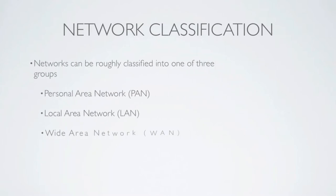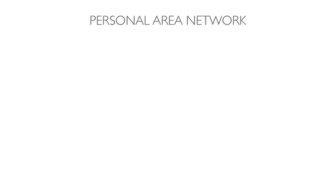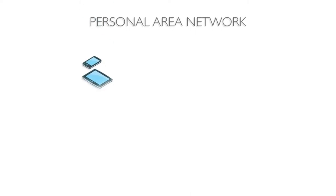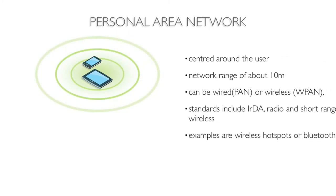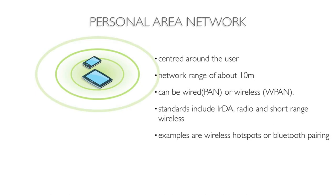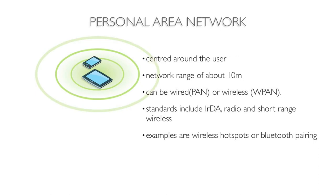Networks can be classified into one of three groups: personal area networks, local area networks, and wide area networks. A personal area network is used for communication among computer devices and peripherals in proximity to an individual's body, but may not belong to the person in question. These types of networks often use a single transmission media to pair the devices in the network over a 10m range.